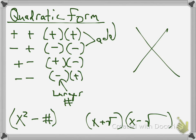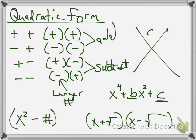So now let's look at quadratic form. Quadratic form, you've got to remember the plus, plus, plus; plus, minus, plus; and minus, minus. Which ones do you add? If you're looking at something like x to the fourth plus some number here, x, let's say b, and some number here, c squared.